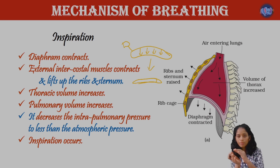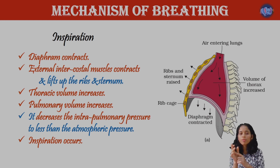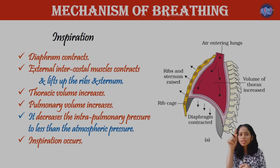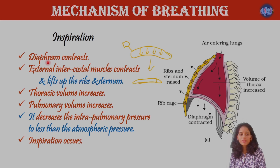During inspiration, the diaphragm is contracted — it moves from a dome or convex shape to a flattened, inverted V shape, and becomes straight. At the same time, the external intercostal muscles contract. This causes the ribs and sternum to be lifted upward.